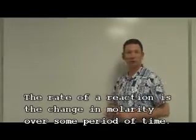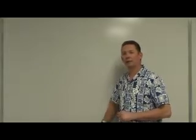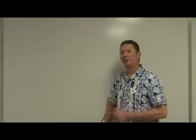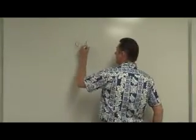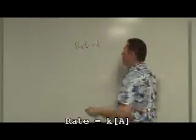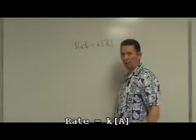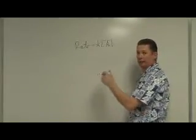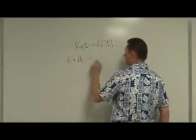Some reactions are extremely slow. For instance, tarnishing of silver is a very slow rate of reaction, but the combustion of ethanol is extremely high rate of reaction. The rate is equal to some mathematical constant multiplied by some concentration in a balanced chemical equation. For this reaction, if I had A plus B produces some product.